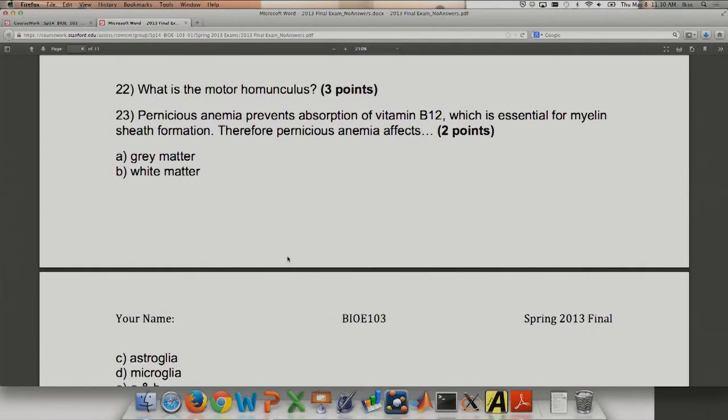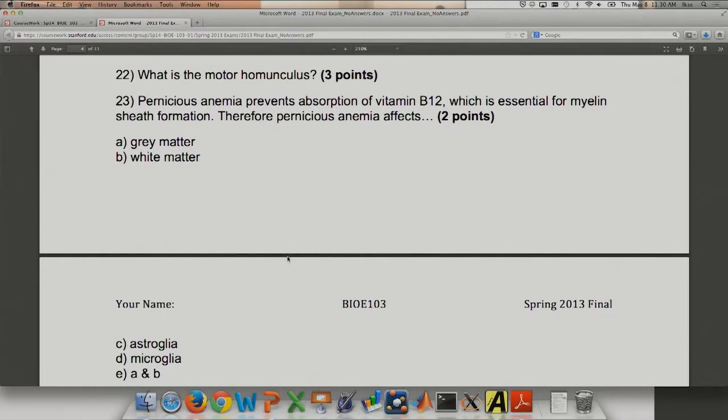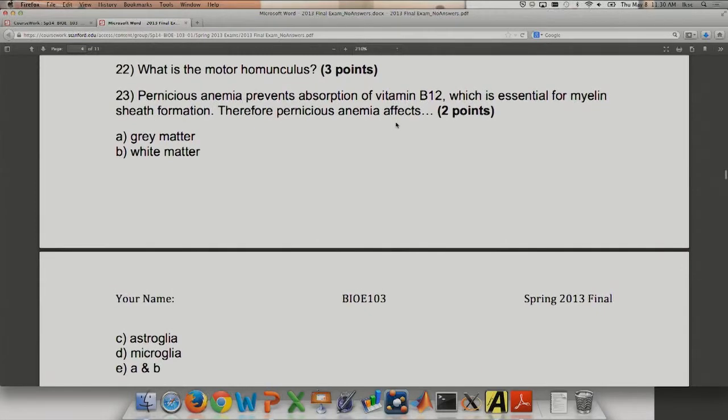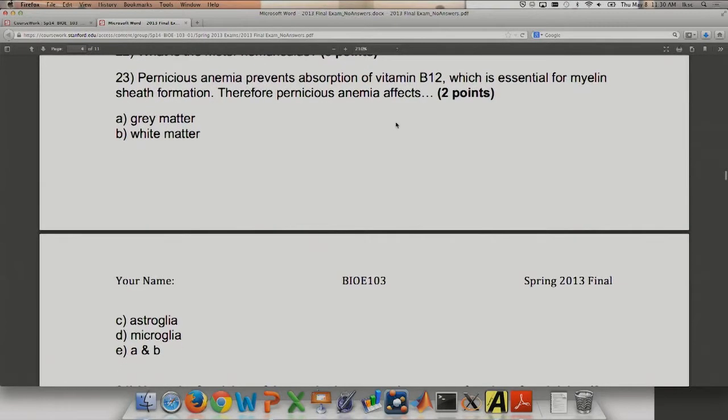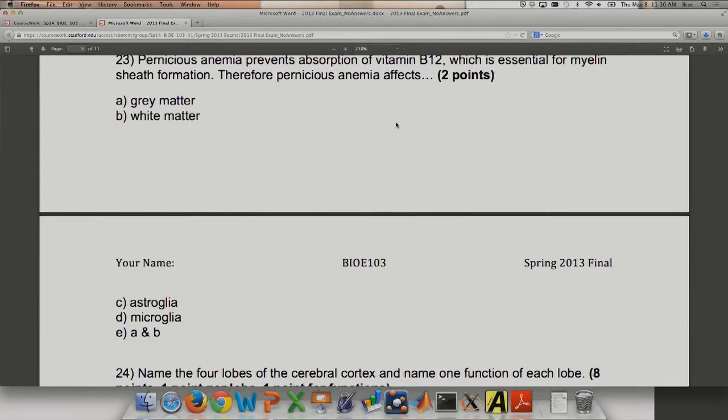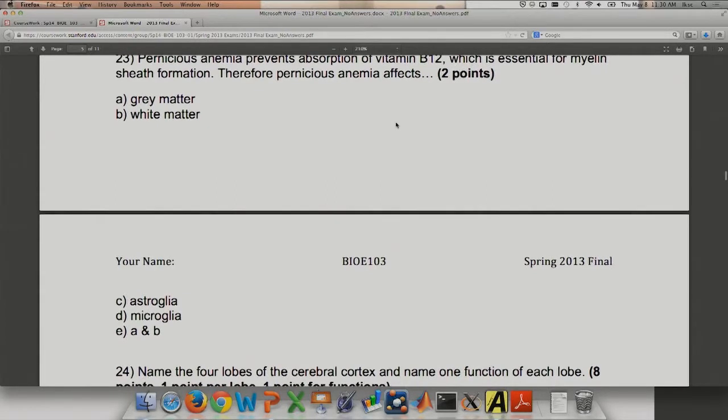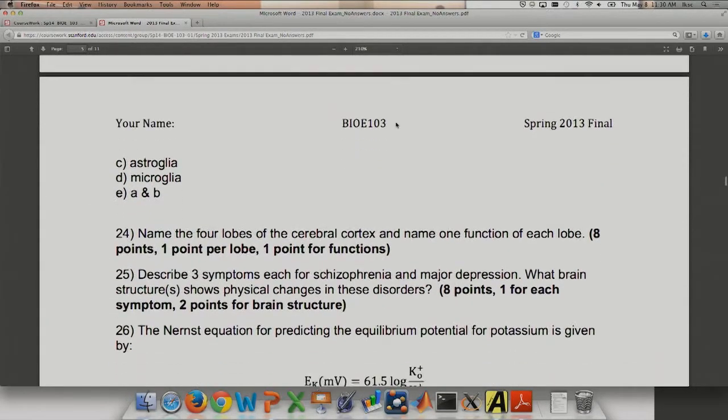Pernicious anemia. Let's just say nutrients necessary for myelin formation are not there. And you know what myelin is, the covering of the neurons. So this disease will affect which one? White matter, gray matter, astroglia, microglia, or A and B? White matter, because that's what white matter is, neurons covered with myelin. If you can't form myelin, then you get issues with that.